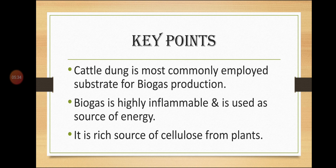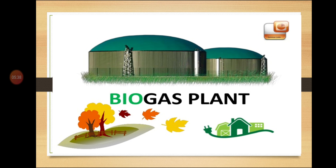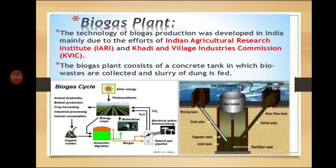The most widely used models of biogas plants are KVIC and IARI. KVIC stands for Khadi and Village Industries Commission, and IARI stands for Indian Agricultural Research Institute. The technology of biogas production in India was developed mainly due to the efforts of these two organizations.